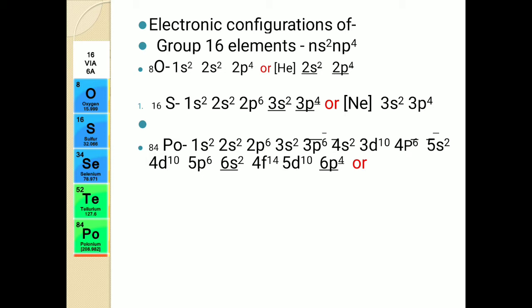If you look at the last shell of polonium, it is shell 6 with only 6 electrons: 6s², 6p⁴. It is very important to remember the last shell electronic configuration, because it determines how many electrons are more or fewer in the outermost shell, and all chemical properties depend upon this. The noble gas previous to polonium is xenon, so the condensed electronic configuration of polonium is [Xe] 6s², 6p⁴.